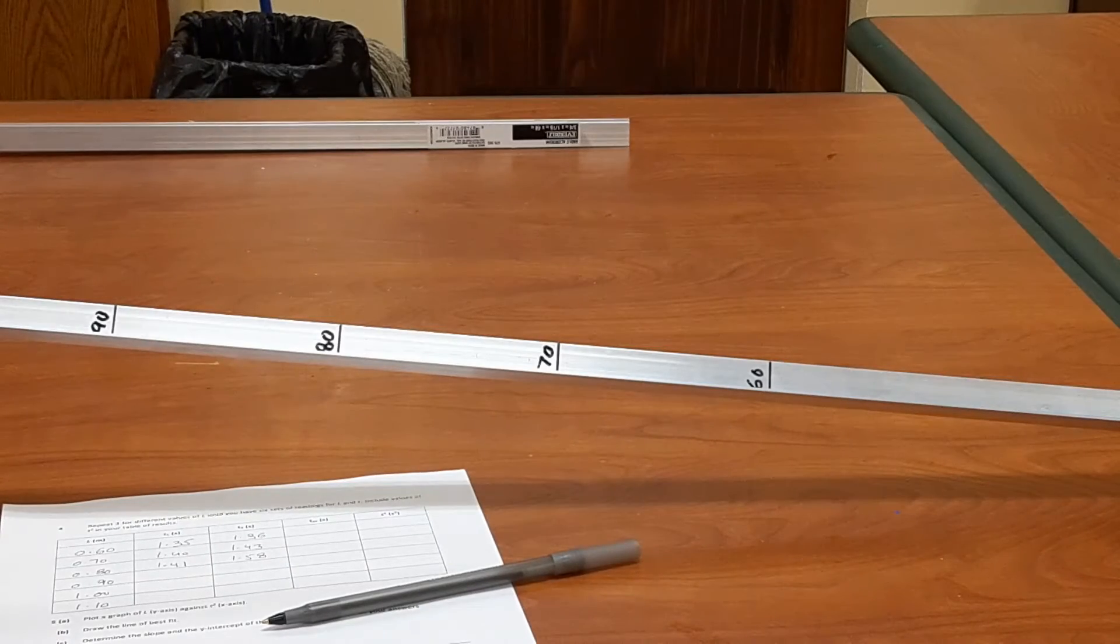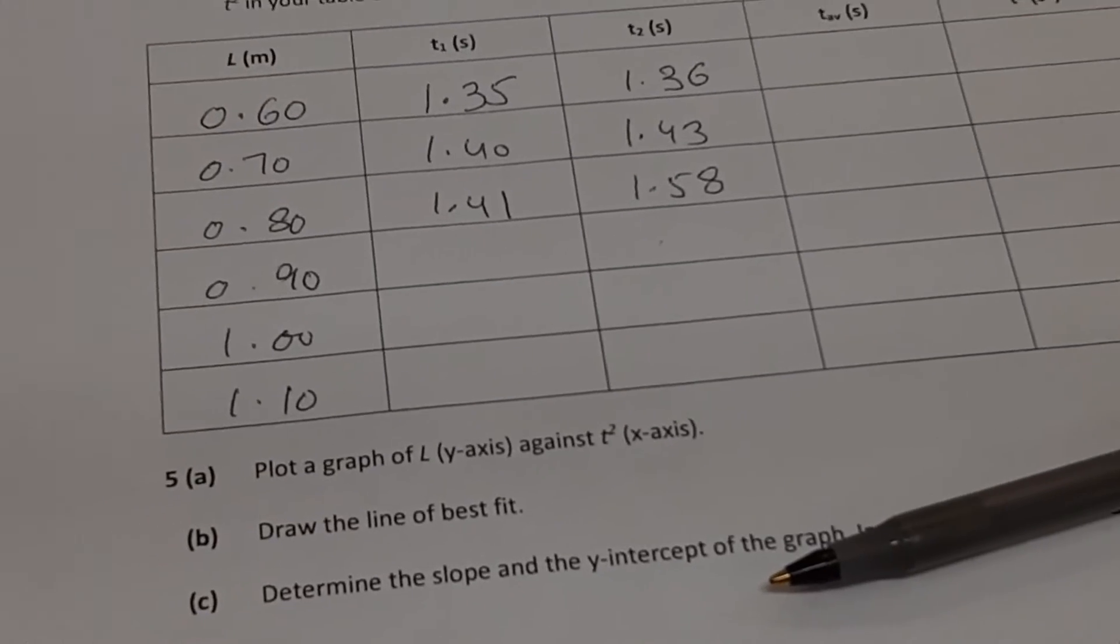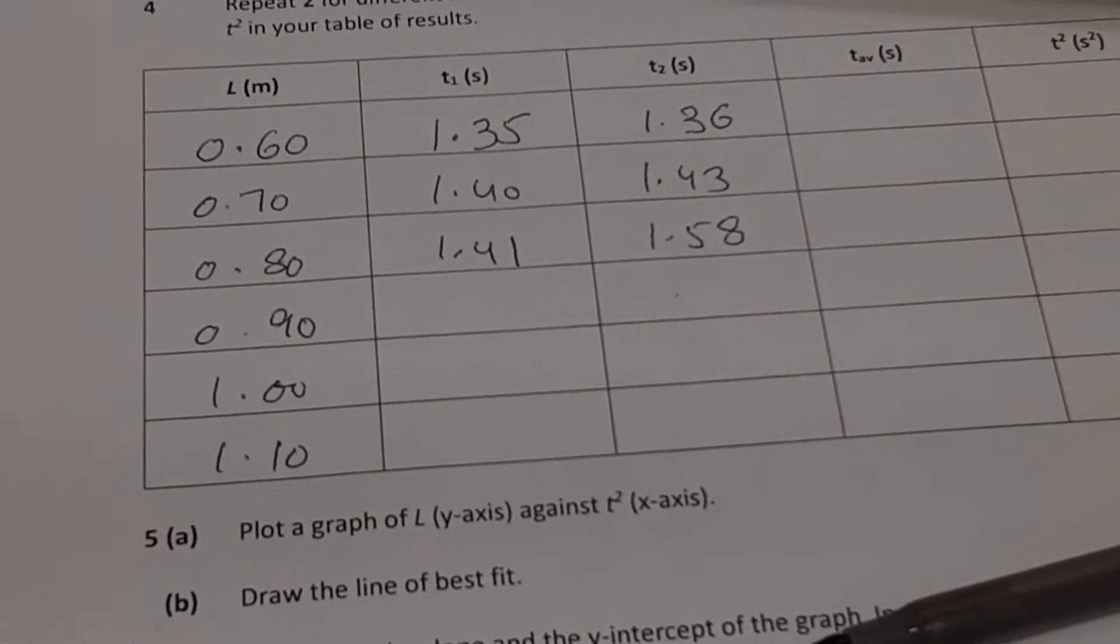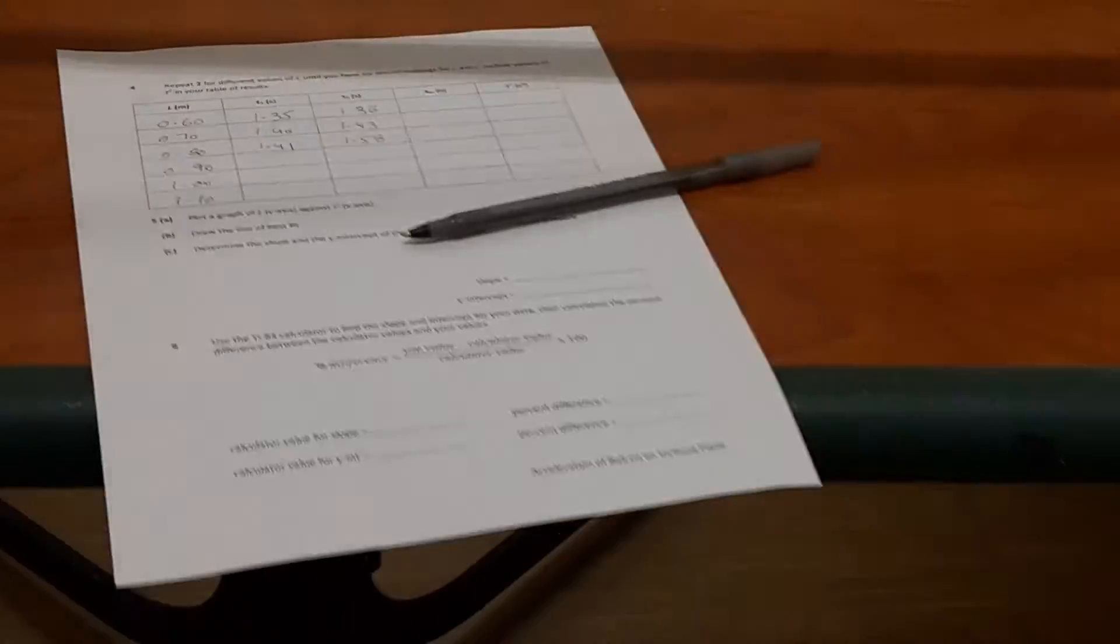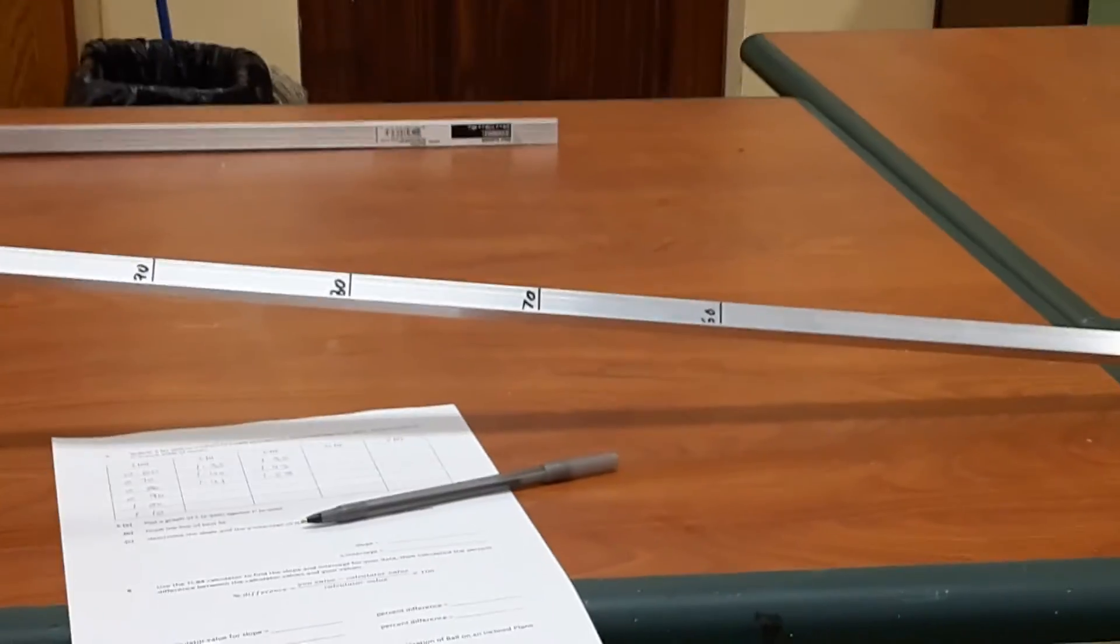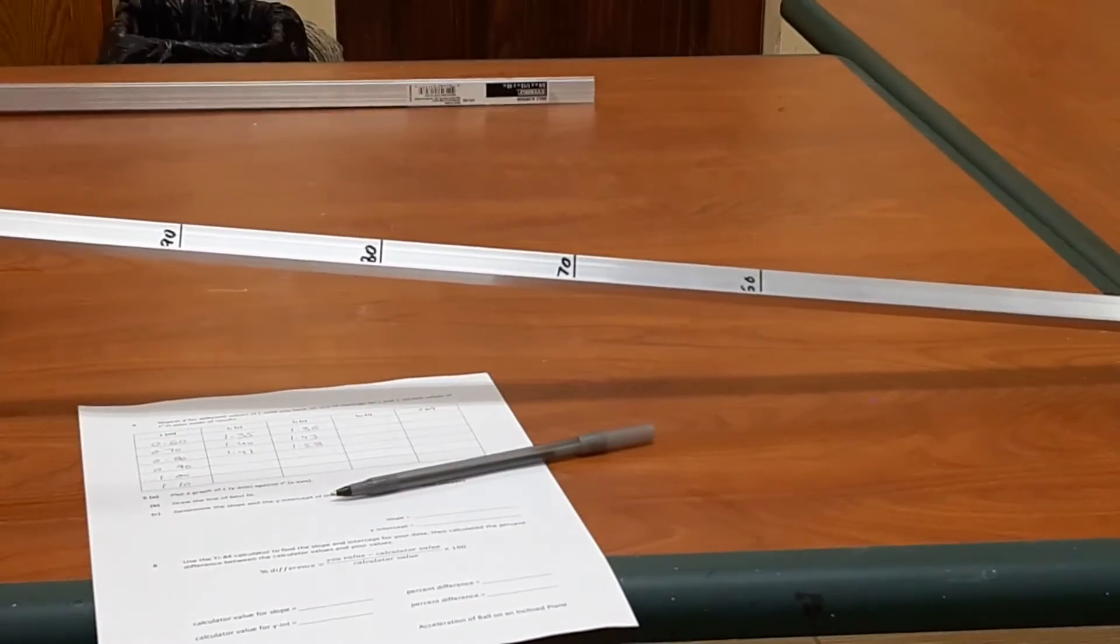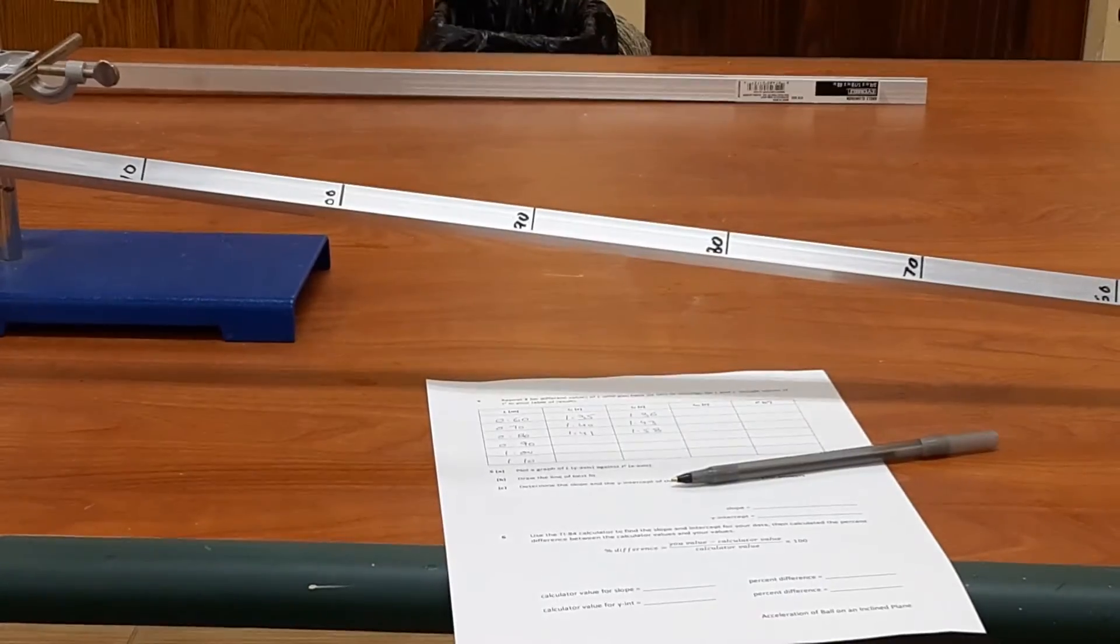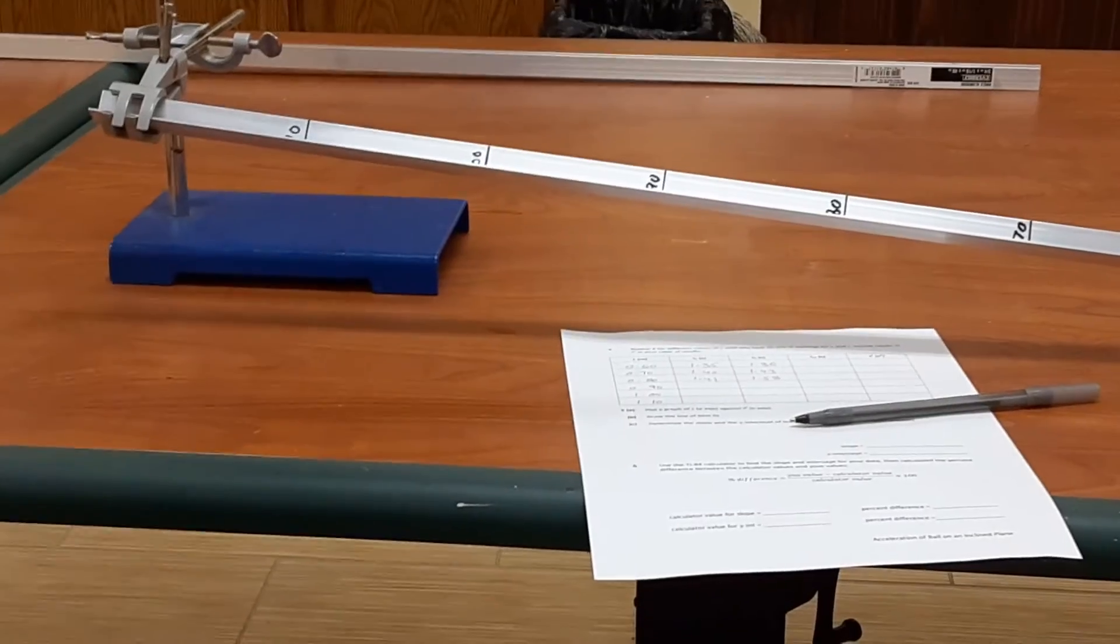Now, I noticed that in the last reading here, the difference between the two, 1.41 and 1.58, that's a big difference. So I would actually do this once more, and I would keep the two values which are closer to each other.